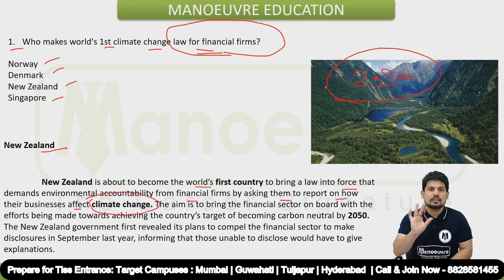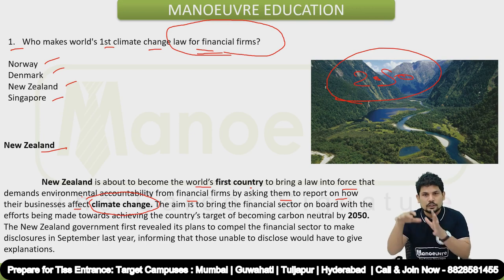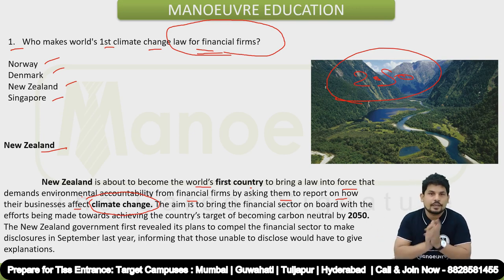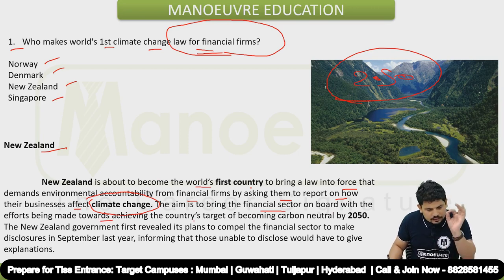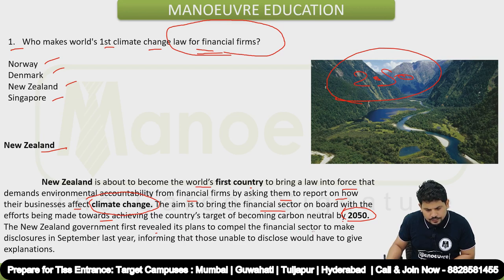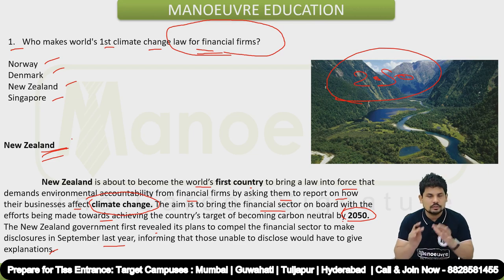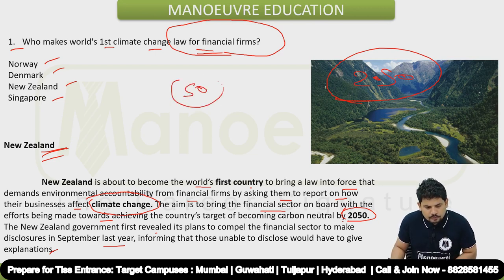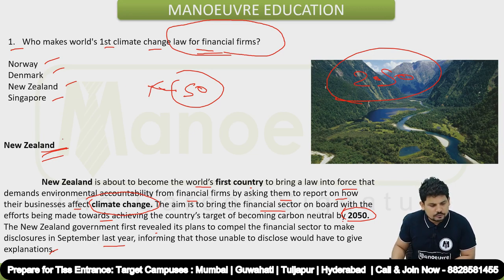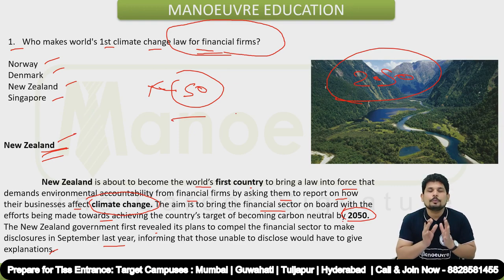The right answer is New Zealand. New Zealand is about to become the first country in the world to bring a law into force that demands environmental accountability from financial firms by asking them to report how their business affects climate change. The aim is to bring the financial sector on board with the effort toward achieving the country's target of becoming carbon neutral by 2050. The New Zealand Prime Minister is Jacinda Ardern.